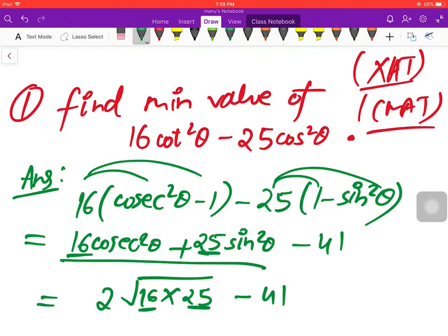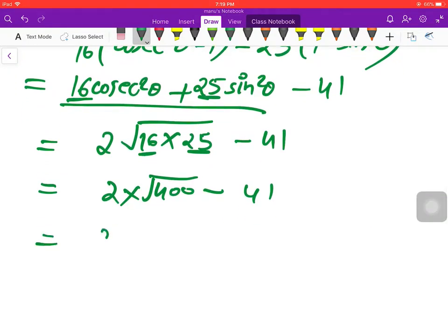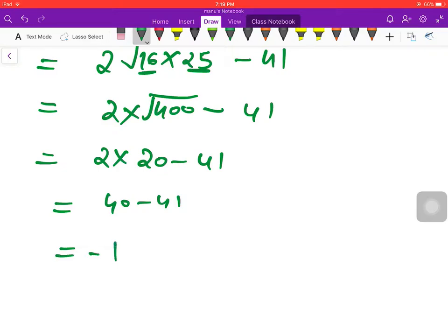So, 2, 16 into 25. Okay? So, 16 into 25 is equal to 400. Okay? 400. So, 40, 40, 41. How much is it? Minus 1. So, minimum value clear? Okay. Thank you.